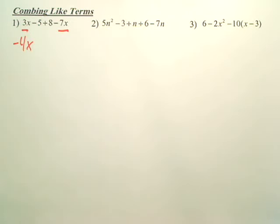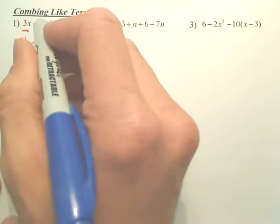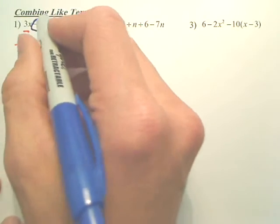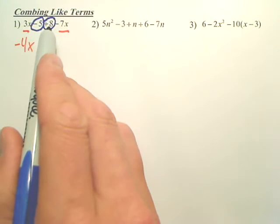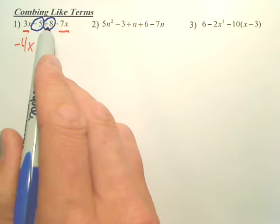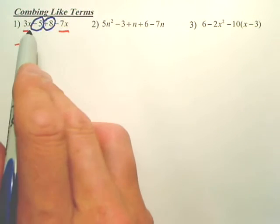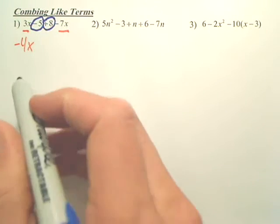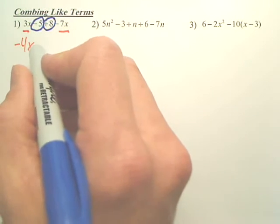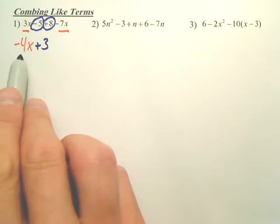Combining these similar pieces. Then, we look at the numbers. And I'm going to circle this time. Those are the numbers. I have a negative 5 and a positive 8. Which has more positive or negatives? The positives have how many more? Three more.